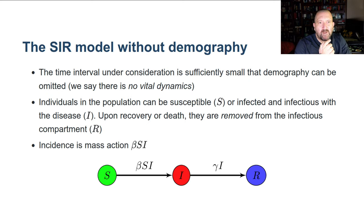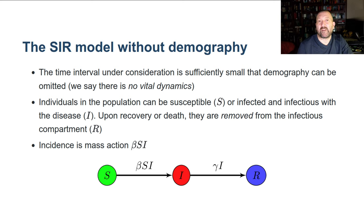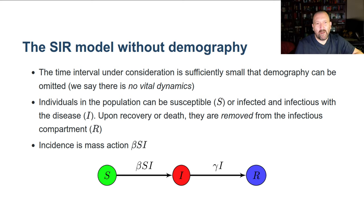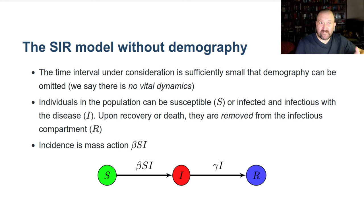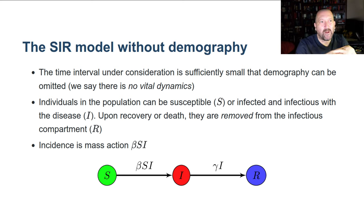This model assumes there is no demography. In the Kermack and McKendrick case, that's a hypothesis they made. When you make such a hypothesis, you have to justify it. The idea is that the period of time we're considering the model for is sufficiently small that demographic effects can be omitted — natural death and birth can be omitted. If you're thinking about an epidemic unfolding over two or three months, or even a year, your population is not going to change fundamentally its characteristics over that period. So that's a reasonable assumption.